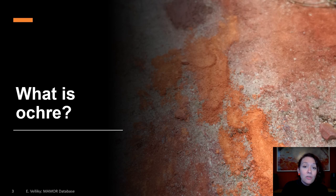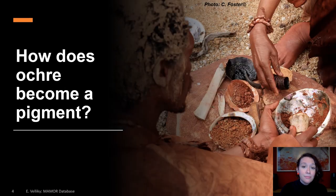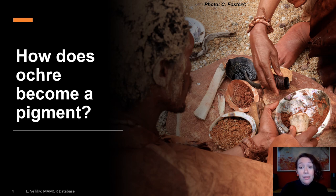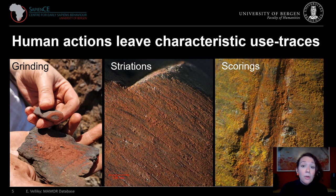So studying the ways humans used ochre throughout time can inform us on aspects of their behavioral and cultural evolution. Now ochre is an earth mineral and was usually collected in the form of raw nodules or rocks. These were transported back to sites and in many cases we simply find these raw unmodified nodules. However, we believe that the primary reason humans collected ochre was to create pigments or paint out of them. Ochre can turn into pigment in several ways, most notably grinding, pulverizing, scraping, or scoring.